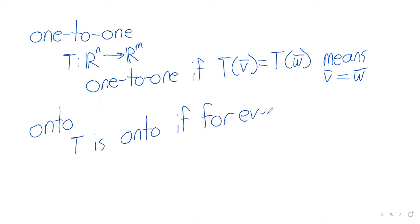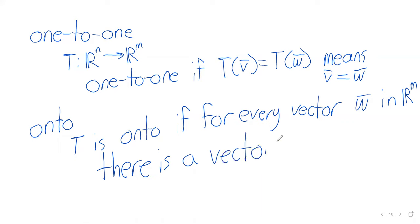One-to-one and onto are traditionally presented at the same time. In sort of higher level math classes like linear algebra. It's possible you've never seen onto, though. I don't know where this definition is first presented. It may be here. T is onto if for every vector W in R^m